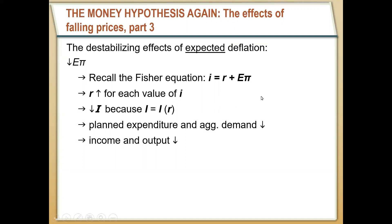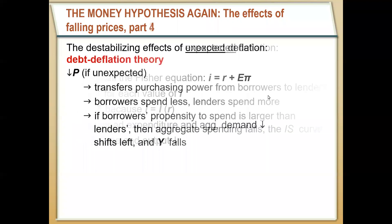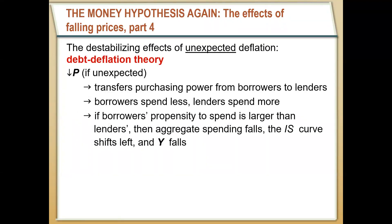We can also see destabilizing effects if the deflation is unexpected. Irving Fisher — the same person behind the Fisher equation — put forth the debt deflation theory, saying that a sudden unexpected decrease in prices arbitrarily transfers purchasing power away from borrowers toward lenders. In response, borrowers would spend less and lenders would spend more. Basically, borrowers are net poorer and lenders are net wealthier. If borrowers' marginal propensity to consume is larger than lenders', then aggregate demand falls in response to unexpected deflation, and total income and output would also fall.